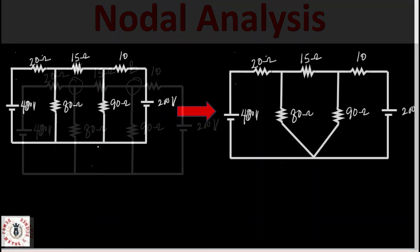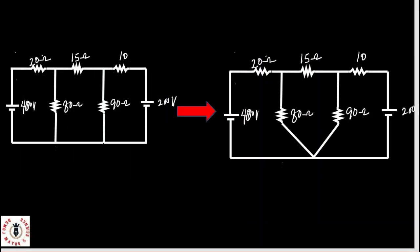I can redraw my network to begin to look like this. Why? Because there is no element between any of these joints here, so they form a node, as you can see in this new diagram. We'll be using this diagram — this is node A where we'll have VA, this is node B where we'll have VB, and obviously here is my reference node.